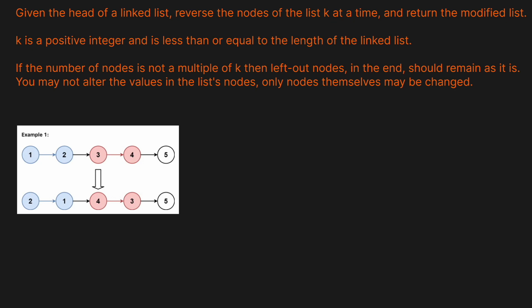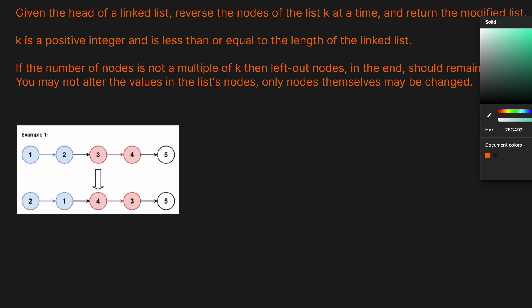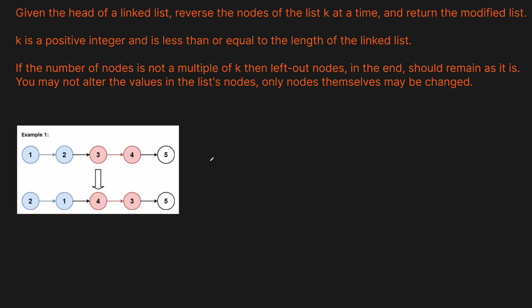Let's look at a basic example. This question is relatively straightforward — it's actually how we execute it that is the challenge. We have the linked list 1, 2, 3, 4, 5, and in this example k equals 2. So we want to reverse them 2 at a time.